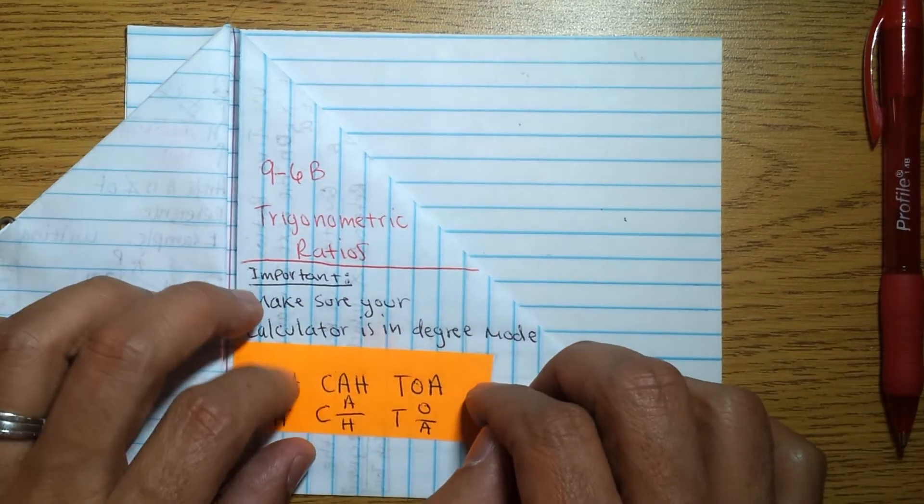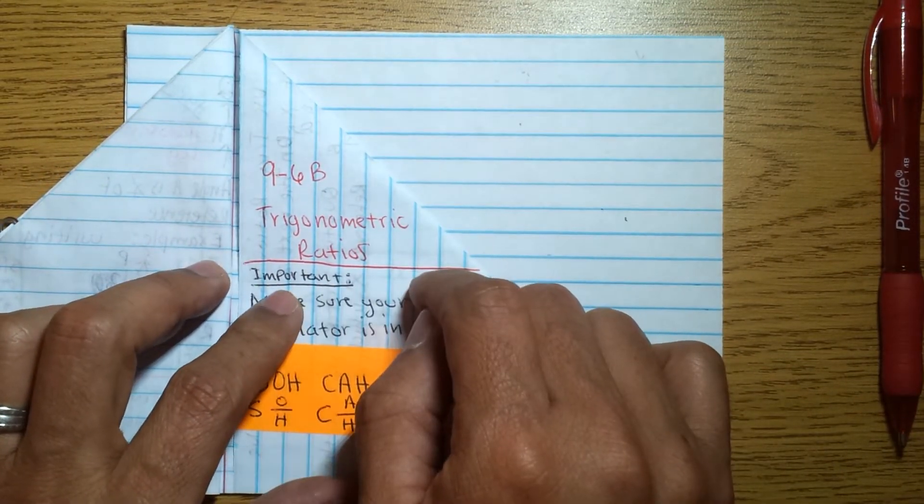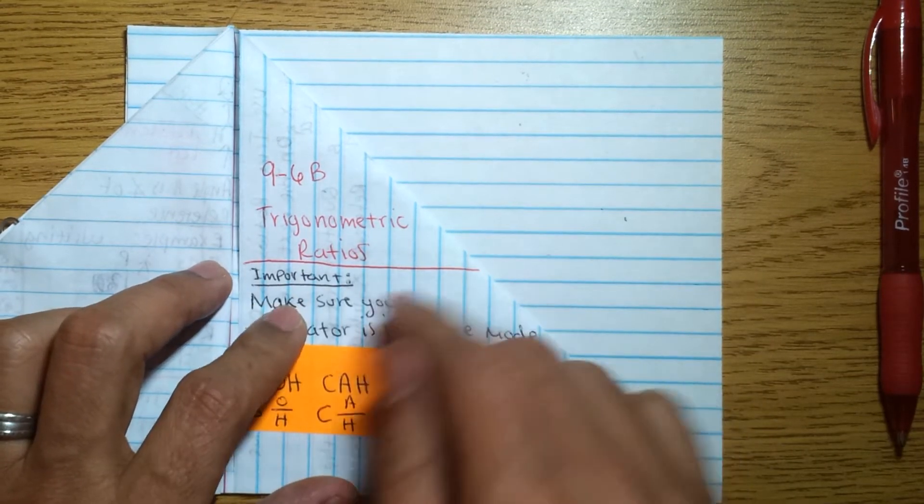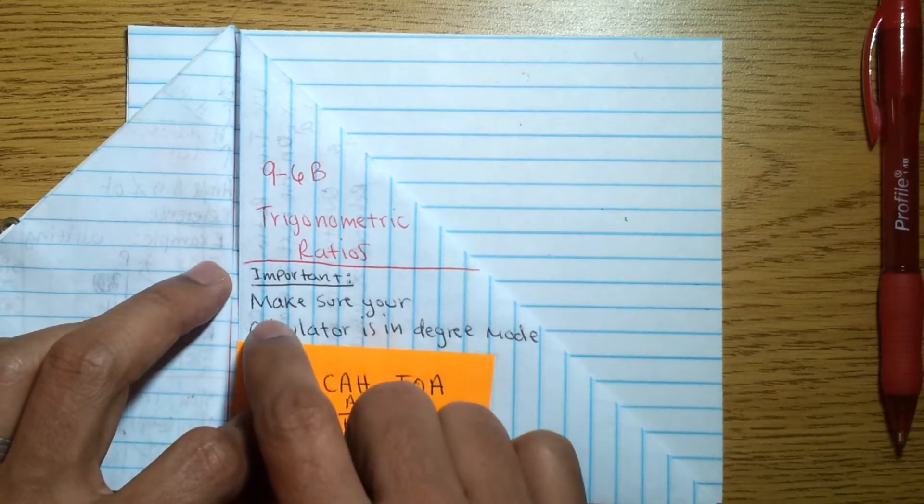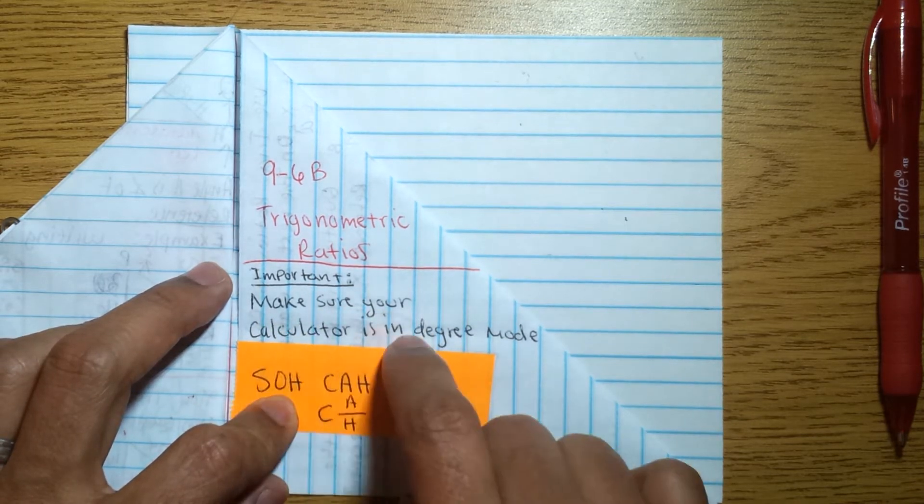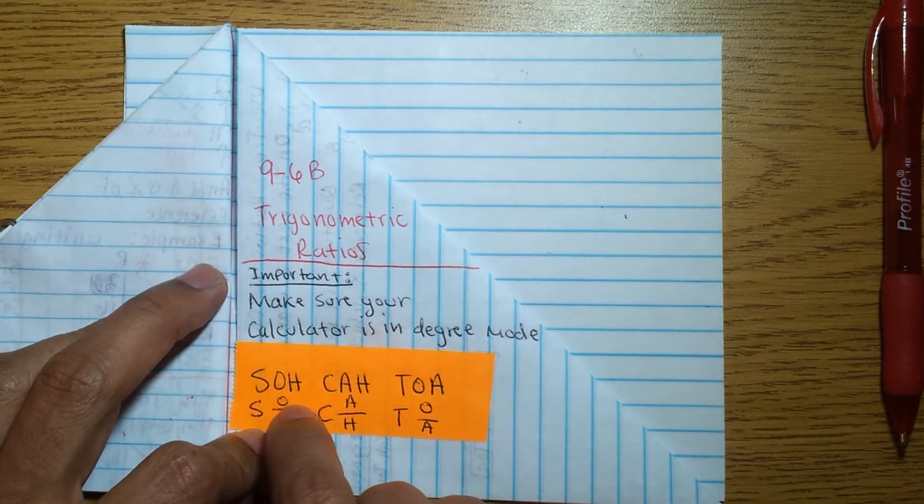Hello. This is the second tutorial for trigonometric ratios, and this is 96B. We did 96A in class. This is very important here. Once you get to the classroom, I'm going to remind you, you need to make sure that your calculator is in degree mode. Don't forget this.